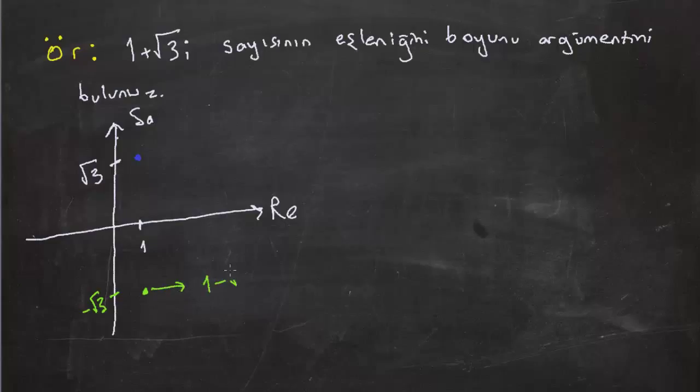Böylece elde ettiğim sayı 1 eksi kök 3 oldu, 1 eksi kök 3 i. Yani aslında burada gördüğüm ifadeyi, i'nin önündeki ifadeyi eksi 1 ile çarpmış oldum.